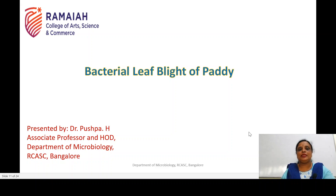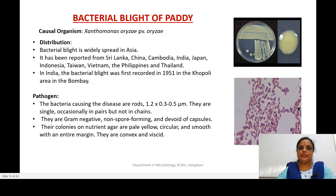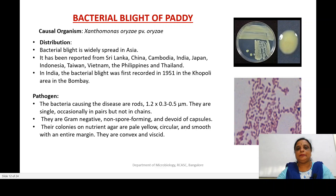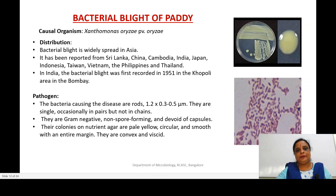Before going into this particular disease, what is blight? What is the meaning of blight? It is nothing but a burnt-up appearance. In blight of paddy, the entire paddy plantation appears as though it has burnt up — the plants get wilted and appear as though they have been burned. That is the reason the disease is called blight disease. Blight disease in case of paddy is caused by a bacteria called Xanthomonas oryzae.